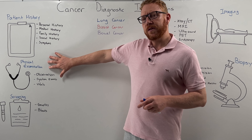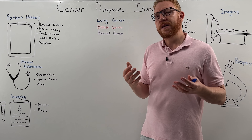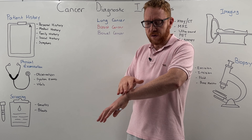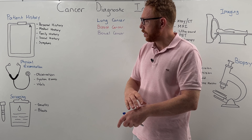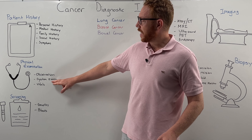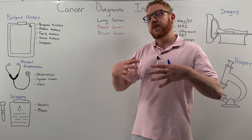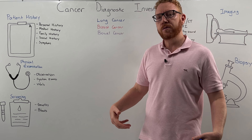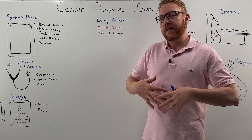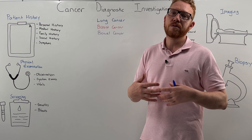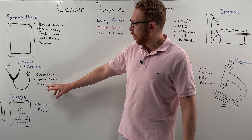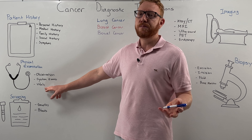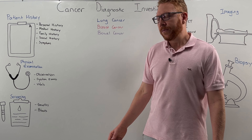Next is the physical examination, performed by the clinician. This can involve observation — for example, looking at the skin — and examination of different body systems: the cardiovascular, respiratory, neurological, gastrointestinal, and urinary systems. It can also include basic vitals such as blood pressure, heart rate, and respiratory rate.